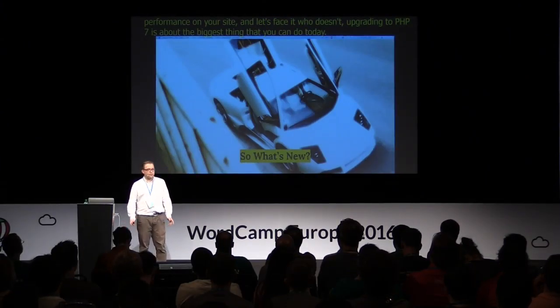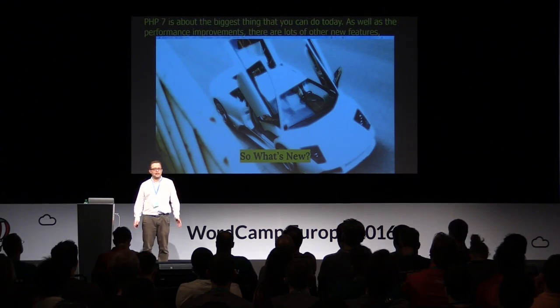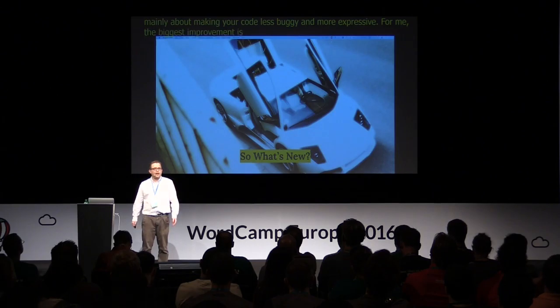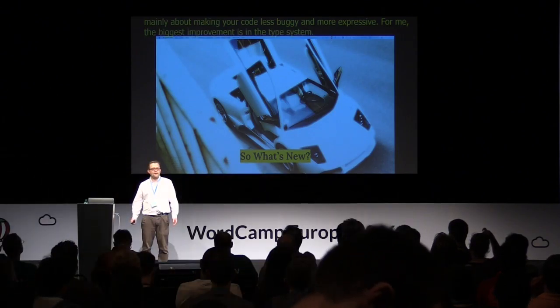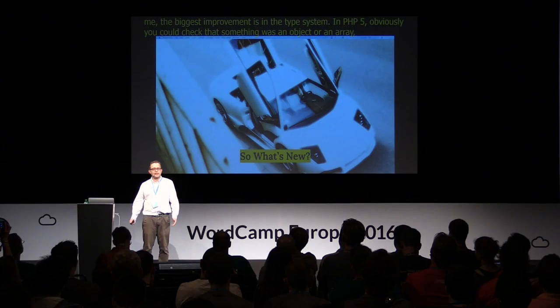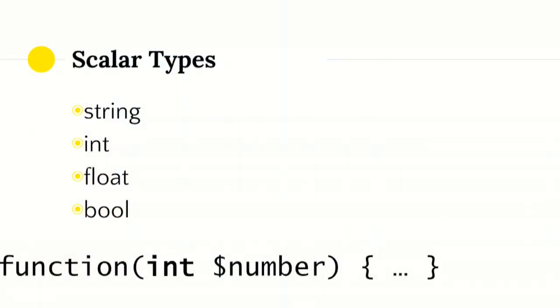As well as the performance improvements, there are lots of other new features, mainly about making your code less buggy and more expressive. For me, the biggest improvement is in the type system. In PHP 5, you could check that something was an object or an array, but you couldn't check for things like strings and integers. In PHP 7, you can check for scalar types like string, integer, floats, and booleans. They work exactly the same way as the type system in PHP 5.